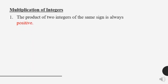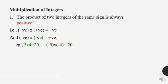Multiplication of integers. The product of two integers of the same sign is always positive. That is, positive × positive = positive, and negative × negative = positive. Examples: 5×4=20, (-5)×(-4)=20, 9×3=27, (-7)×(-5)=35.